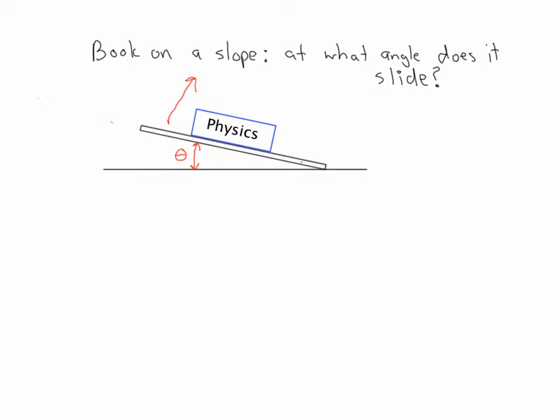The way to solve this is to say at the point where the weight pulling along the slope is exactly equal to the frictional force—the maximum frictional force that this object can produce—that is the maximum angle, or that's the angle where it just starts to slide.